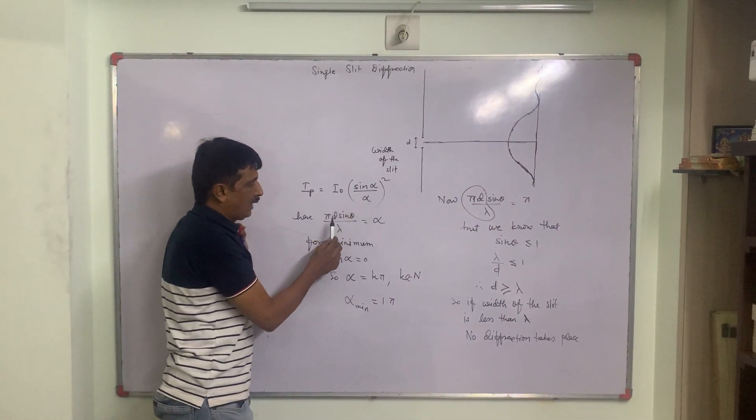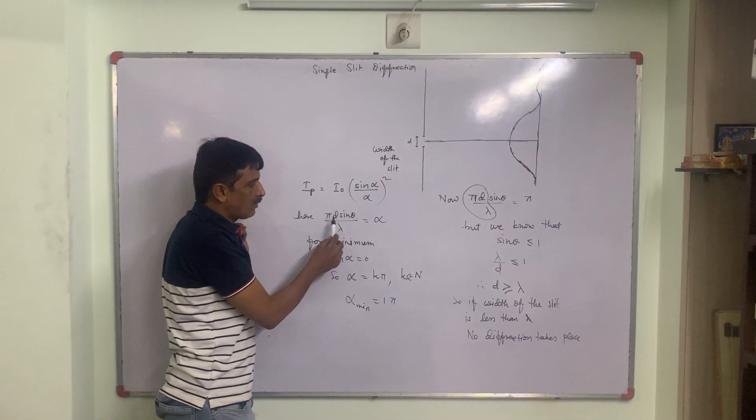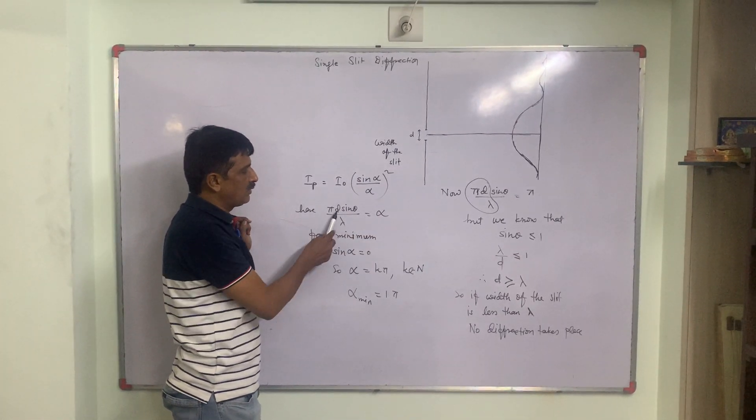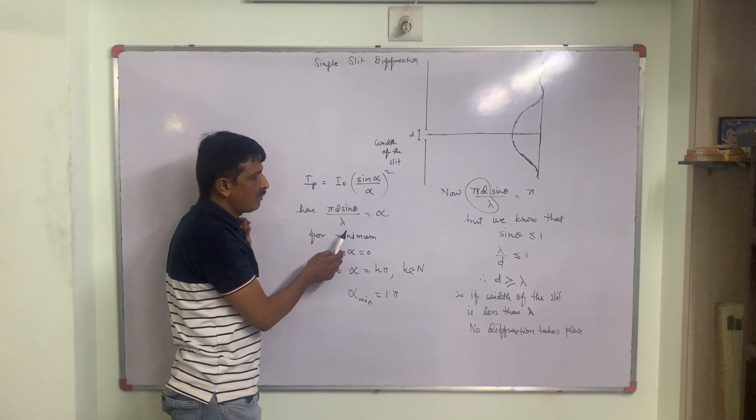But what is alpha? According to theory we have discussed already, pi d sin theta by lambda is alpha. d is the width of the slit, lambda is the wavelength.